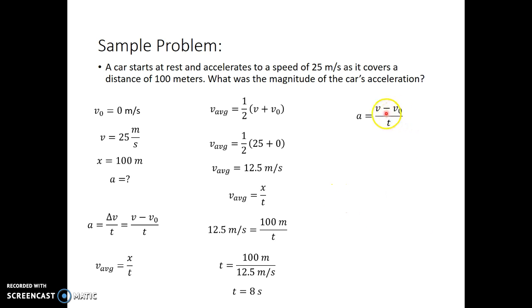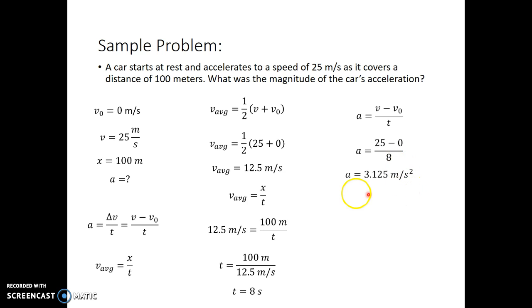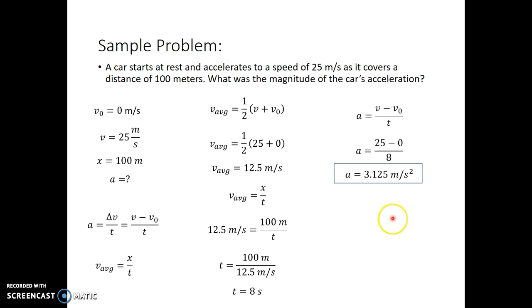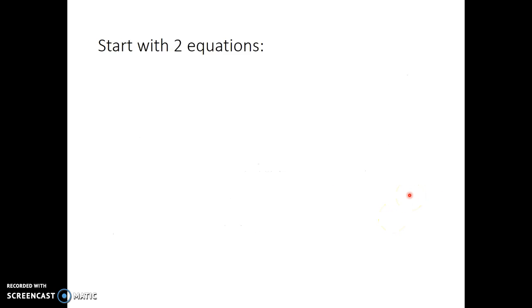I still don't know my car's acceleration, so now I have to go back to my original equation: acceleration is v minus v₀ over t. My change in velocity is final velocity of 25 minus initial velocity of zero, divided by 8 seconds, giving me an acceleration of 3.125 meters per second squared. That was a lot of work to get one answer — so that's why we want to derive equations of motion for constant acceleration to make this much easier.